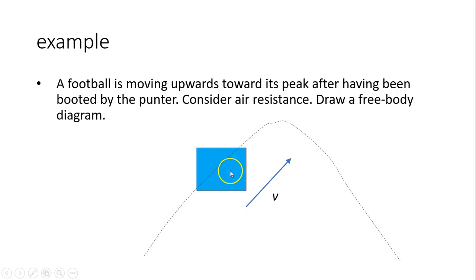So as the football is in the air, there is gravity, always gravity downward. Because there is air resistance, air resistance is opposite of your velocity, so air resistance is this way, F_air. That is the free body diagram for this football.